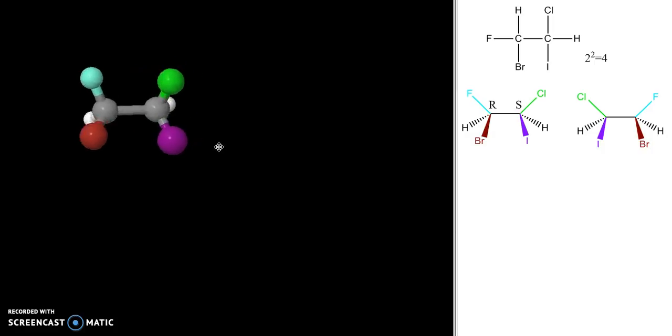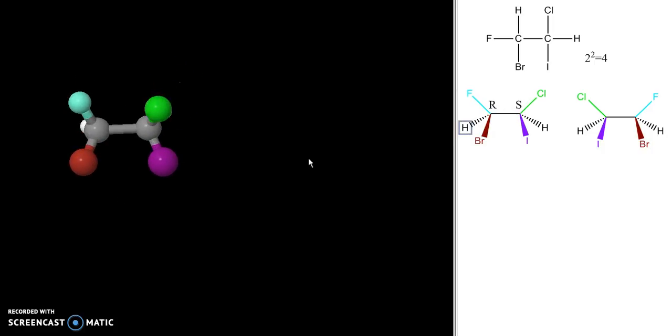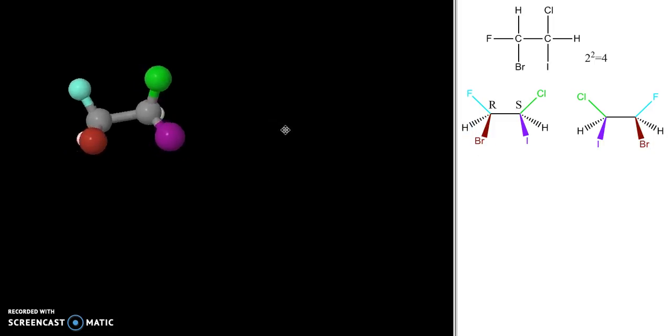So this is a three-dimensional model of my first stereoisomer. I've color coded my groups over here the same way they're colored in my three-dimensional model. And I want to talk about how I go from this one to this one.